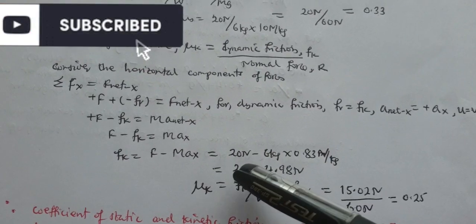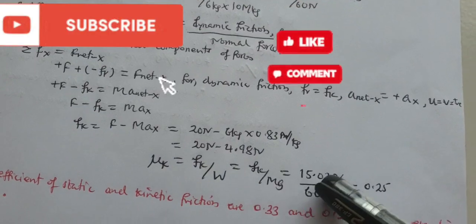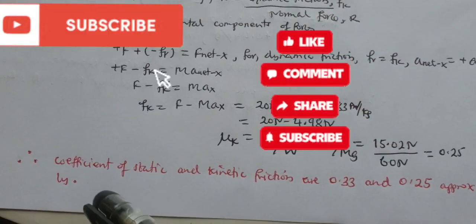That is equal to 0.25. Hence the coefficient of static and kinetic frictions are 0.33 and 0.25 approximately, respectively.